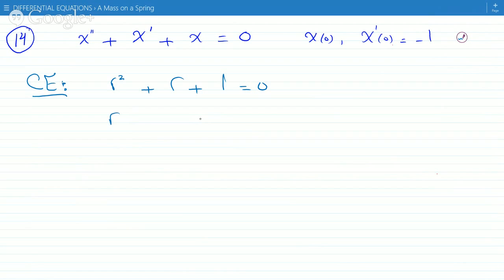So, quadratic formula, I'm sure you know what it is. Minus b plus or minus the square root of b² minus 4ac all over 2a. So here a is 1, b is 1, and c is 1. So we get minus 1 plus or minus over 2.